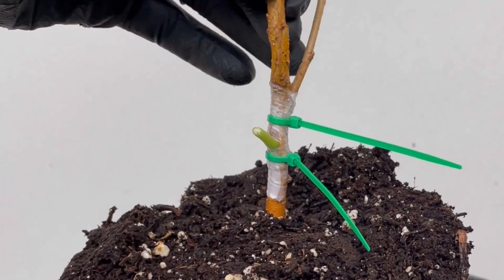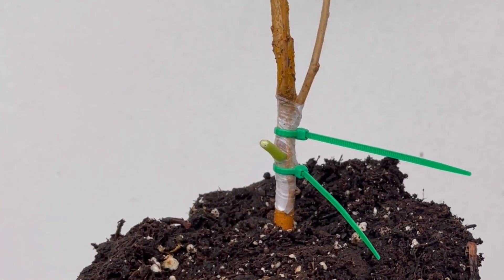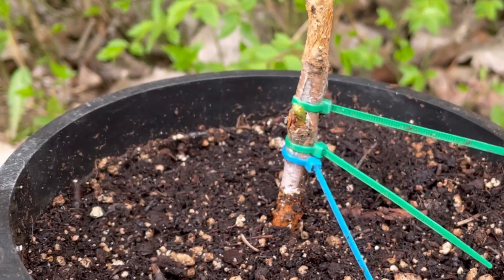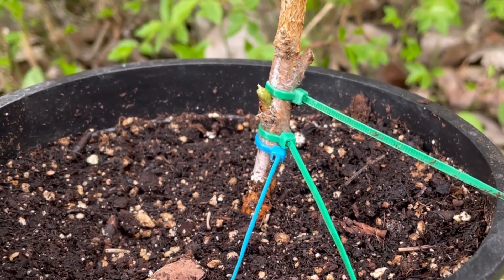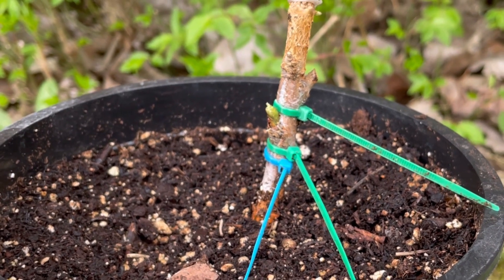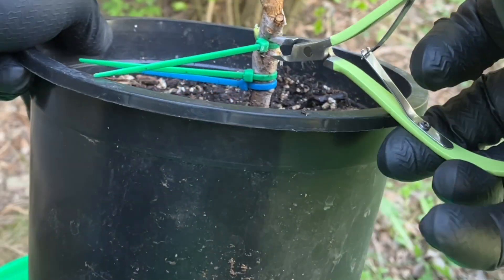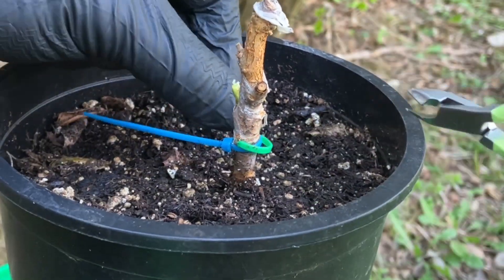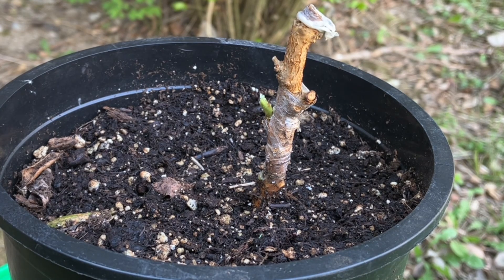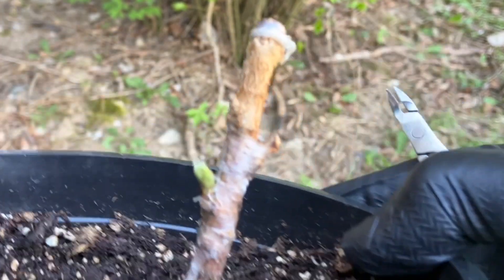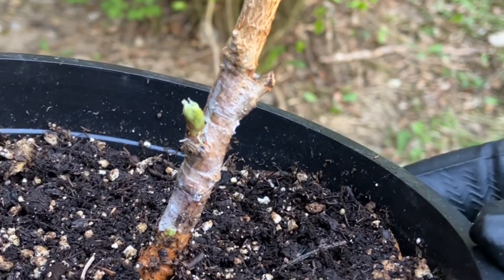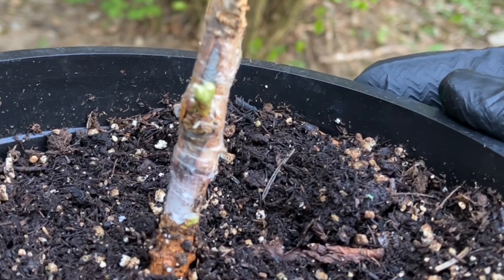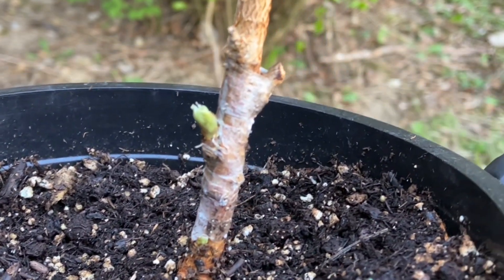And there we have it. An inverted T-bud graft of a Black Prince on a Morris Rubra seedling. That should keep it from restricting the growth. Let's get a closer look here. We'll check back in a couple of weeks.